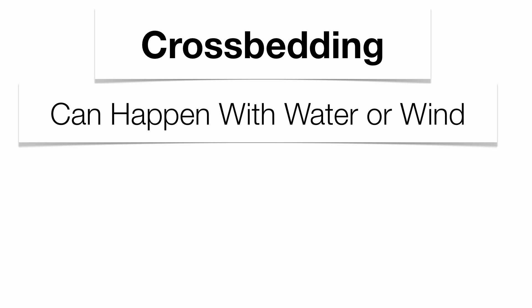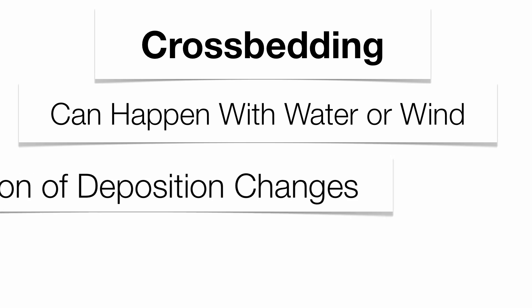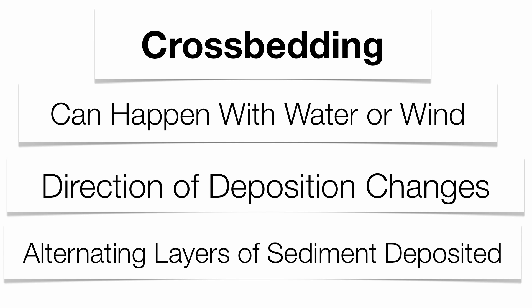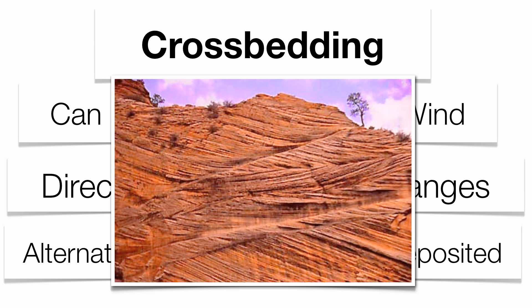Crossbedding can occur as well, most likely with wind but sometimes with water, when the direction of deposition changes. When the direction of deposition changes, your bedding planes are going to change as well. The layers of sediments tend to be altered in terms of their location and deposition. You can see there a really nice picture of crossbedding.